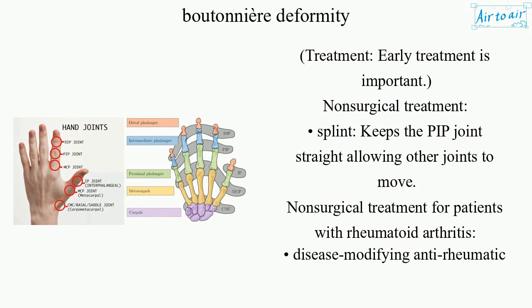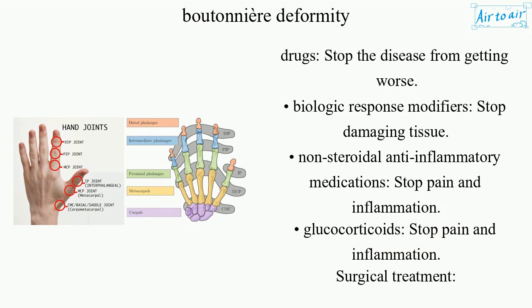Non-surgical treatment includes a splint that keeps the PIP joint straight while allowing other joints to move. For patients with rheumatoid arthritis: disease-modifying anti-rheumatic drugs stop the disease from getting worse, biologic response modifiers stop damaging tissue, and non-steroidal anti-inflammatory medications stop pain.